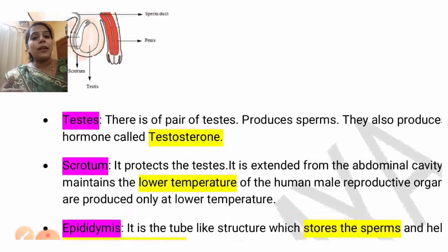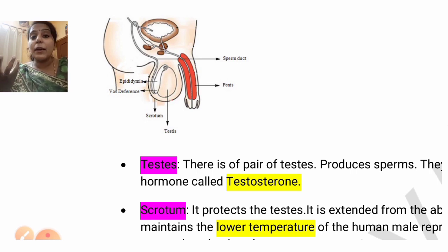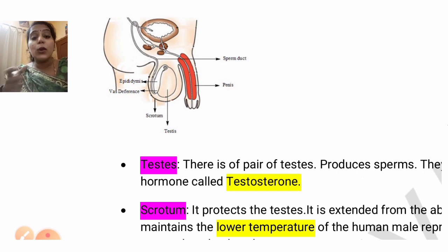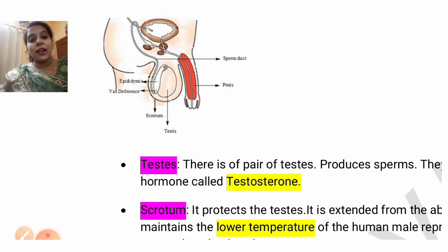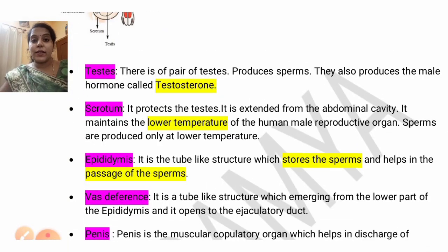Next is the epididymis. The epididymis is a region where it will store the sperm. The sperm produced in the testes comes and collects in the epididymis, and it is also acting like a passage. It provides a passage for the sperms. The epididymis is a tube-like structure which stores the sperms and also helps to pass the sperm.